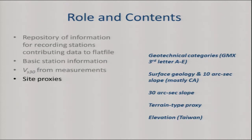About a quarter to maybe 30% of the sites have velocities from measurements. Virtually all the sites have velocities, so where did the other roughly 70% come from? They come from what we're calling proxies. We spent a lot of time trying to make the process of going from a proxy to a VS30 clear, defensible, and not based on vague judgment. So everything is well defined and documented.